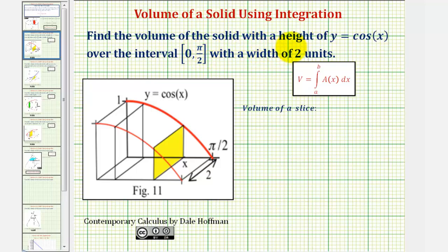We want to find the volume of the solid with a height of y equals cosine x over the closed interval from zero to pi over two with the width of two units. So our goal is to find the volume of this solid here. Before we do this, let's start with a review.